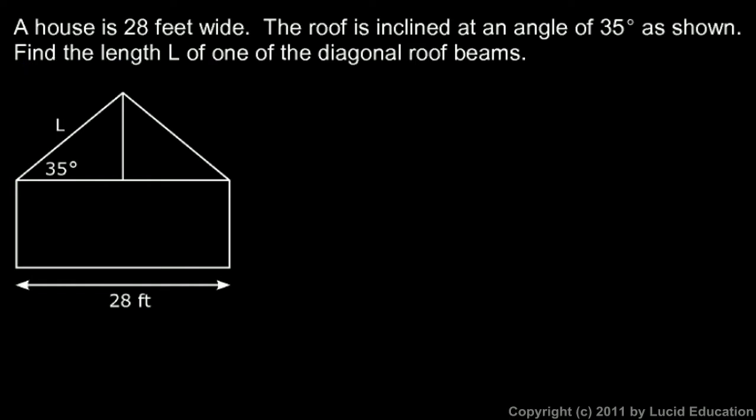Here's a right triangle and we know the angle 35 degrees. Assuming that's horizontal and that's vertical, which is a pretty reasonable assumption, that means we have a right angle right there. We're looking for L here, this length, and we know this length because this is 28 feet all the way across. This length here must be half of that, so let's write 14 feet.